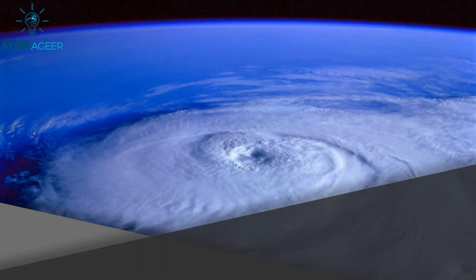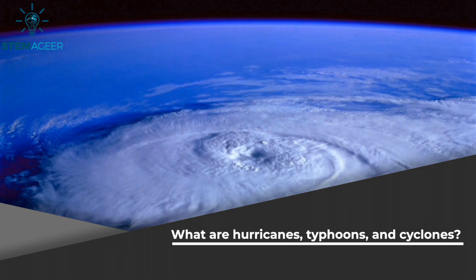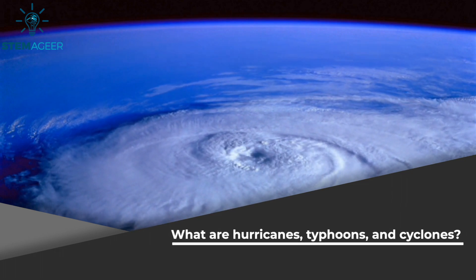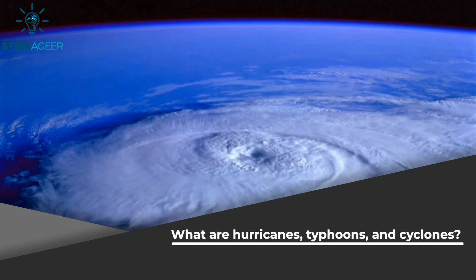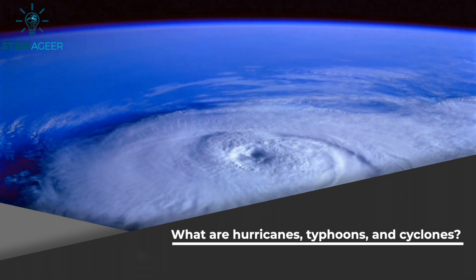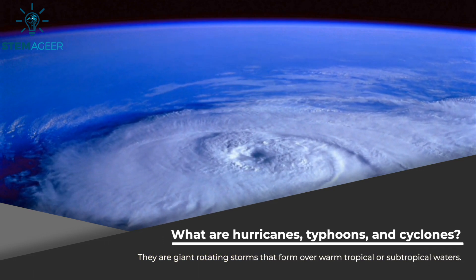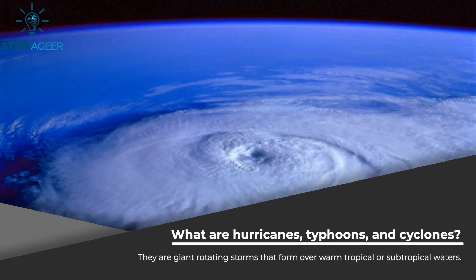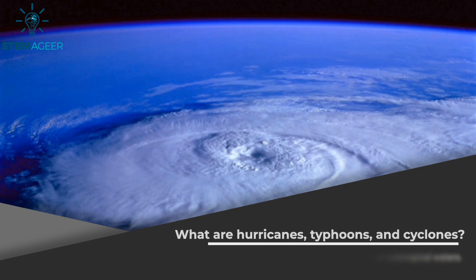So what exactly are hurricanes, typhoons, and cyclones? They are giant rotating storms that form over warm, tropical, or subtropical waters. Many people ask why we hear different names for what seems to be the same thing. That's because the name of a storm changes depending on where it forms.